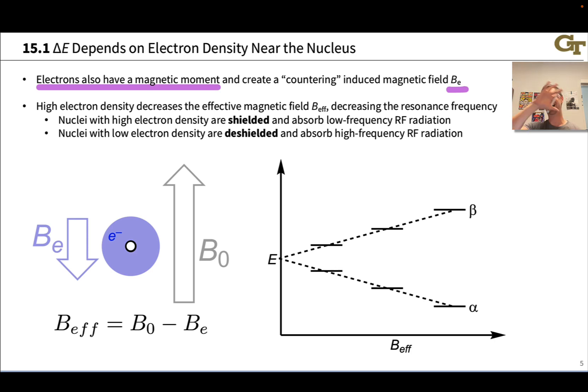Nuclei with high electron density around them we call shielded. High electron density around the nucleus means I get a big countering magnetic field from those electrons and the effective magnetic field felt by the nucleus is relatively small.